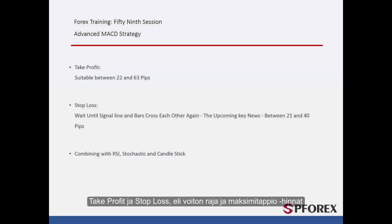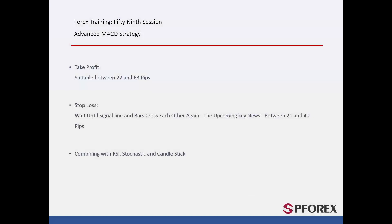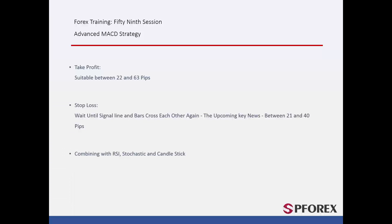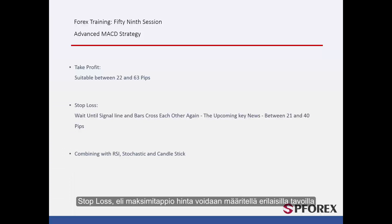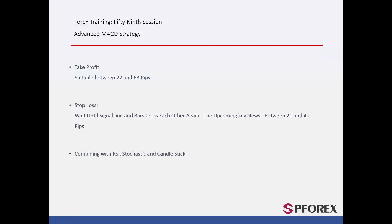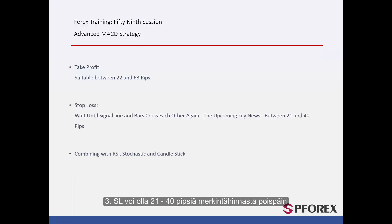Take Profit value is between 22 and 63 pips based on other confirmations and type of candle pattern on the entry price. Stop loss price can be determined with different methods: (1) SL can be placed on the spot where the signal line passes the bars again; (2) SL can be specified based on the analysis of future major calendared news; (3) SL can be 21 to 40 pips away from an entry price.